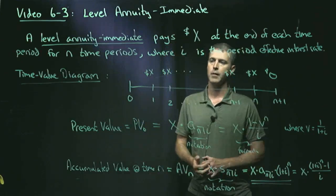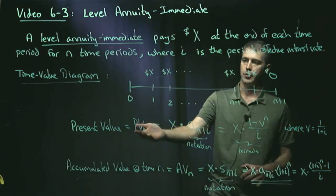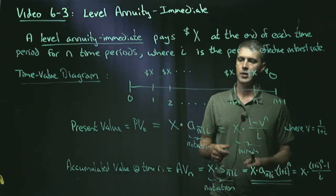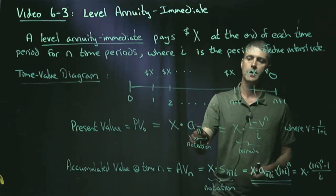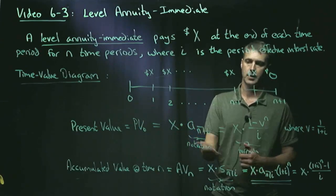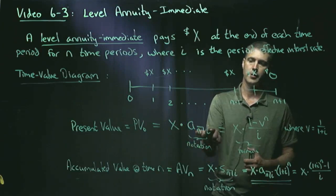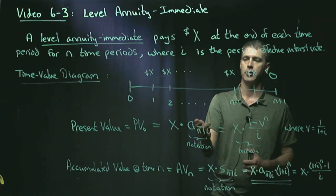So here's the present value formula. The present value at time zero is denoted notationally as X times A angle N at I. So this notation here is the present value of an annuity immediate.